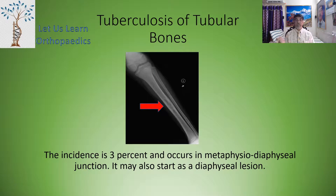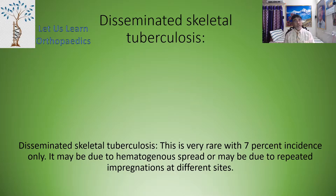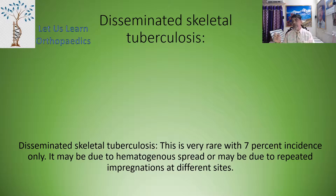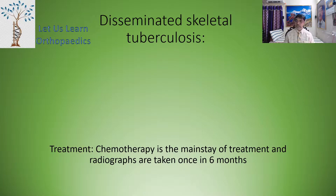The incidence is 3% and it occurs at the metaphysiodiaphysial junction usually, as seen in the first picture of the ulna. It may also start in the diaphysial region, as shown in this x-ray indicating the middle third, marked by the red arrow. There is also disseminated skeletal tuberculosis — a very rare condition with 7% incidence — which may be due to hematogenous spread or repeated implantation at different sites. Rarely it may present as multiple cystic lesions, called osteitis tuberculosis multiplexe cystoides. Chemotherapy is the mainstay of treatment, and radiographs should be repeated every 6 months to monitor progress.